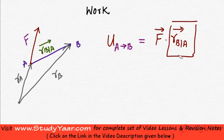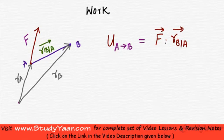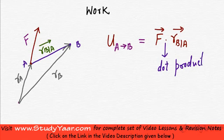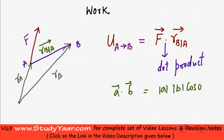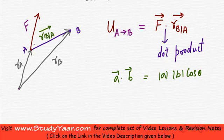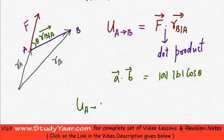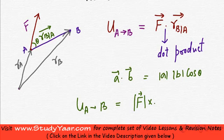It is basically your dot product. We know that A dot B is equal to AB cos theta, right? So, if this angle is theta, then your work done is going to be equal to your modulus of F into your modulus of R_B by A into your cos theta.